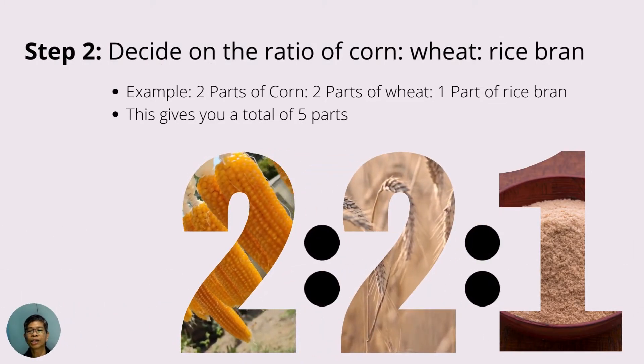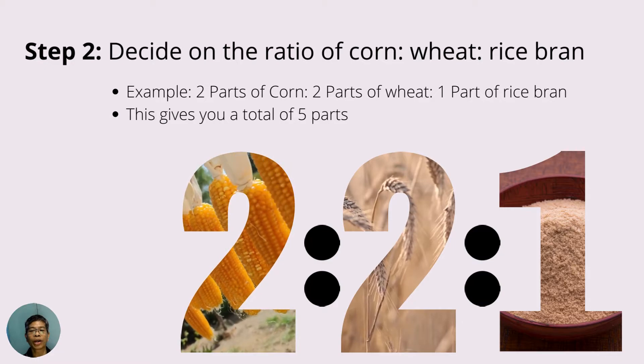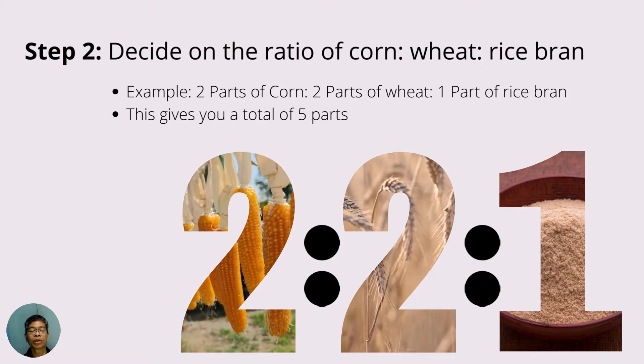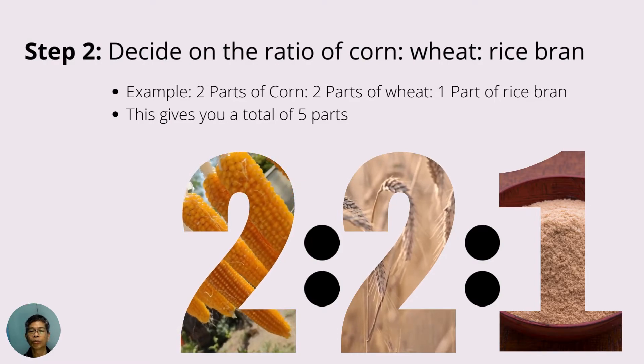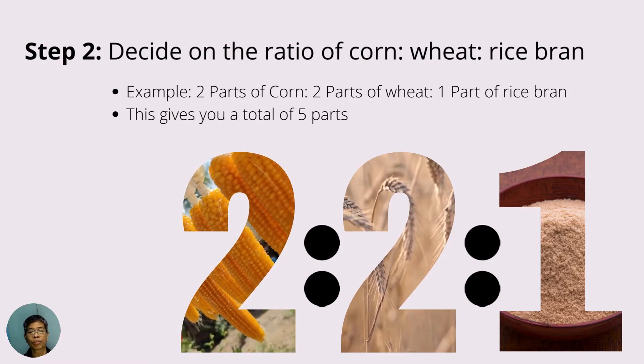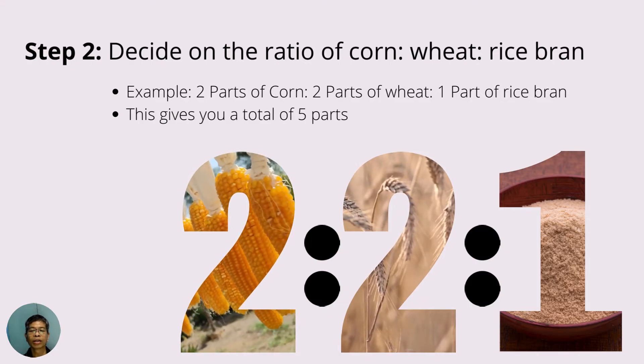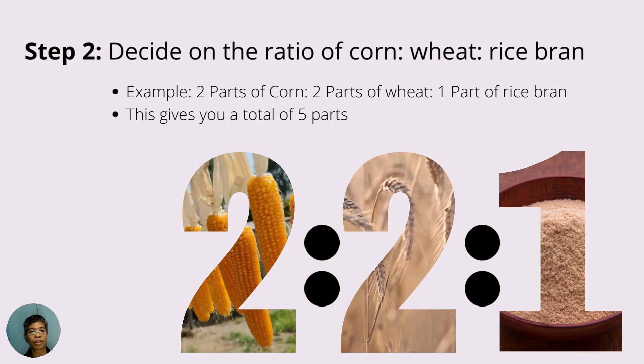The second step is to decide the proportion or ratio of corn, wheat, and rice bran. For example, you decided to have two parts of corn, two parts of wheat, and one part of rice bran. Or a ratio of 2 is to 2 is to 1, which gives us a total of 5 parts.